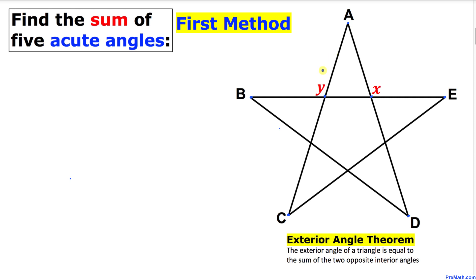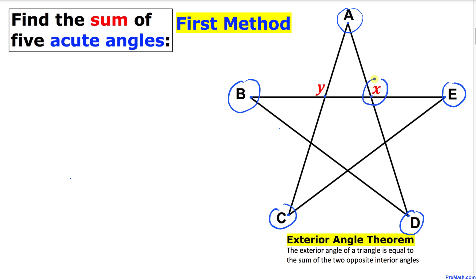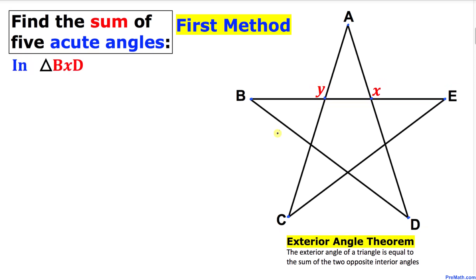So before we proceed, let's focus on this star shape. A, B, C, D, and E are our corner vertices of this star, and X and Y are also vertices of this figure.